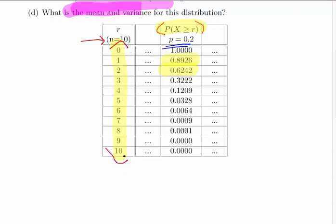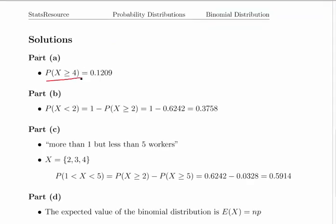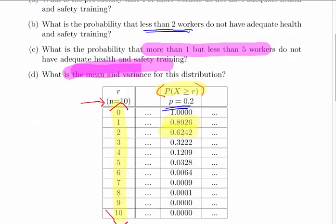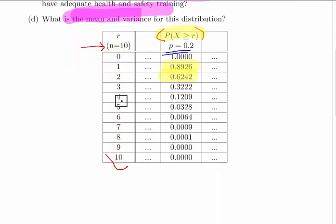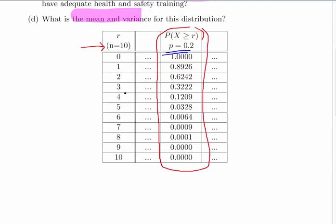So the first one is: what's the probability that X greater than or equal to 4? It is 0.1209. Let's go back and check where I got that from. I go to the correct column here, and then I go to where the row equals 4, and then I just pick out the probability from the intersection: 0.1209.